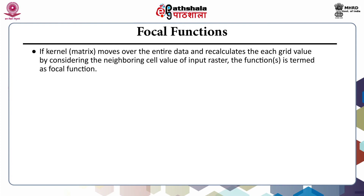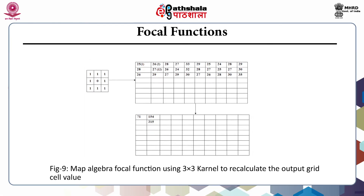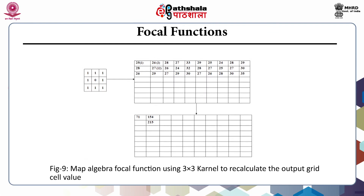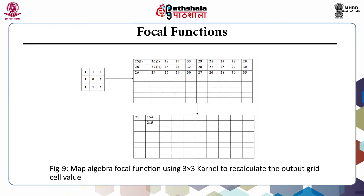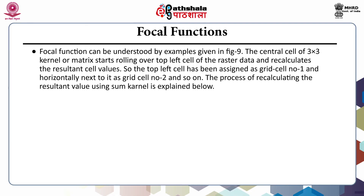If a kernel or matrix moves over the entire data and recalculates each grid value by considering the neighboring cell values of the input raster, the function is termed a focal function. Such functions are used to enhance a particular kind of information in a data set, such as boundary information among different earth features — water, land, forest, settlement boundaries or any other kind of analysis. In this figure, you have a map algebra focal function using a 3×3 kernel to calculate the output grid value. The kernel consists of values in terms of 0 and 1, while the input raster has certain values that correspond to each kernel position, and then we get an output.